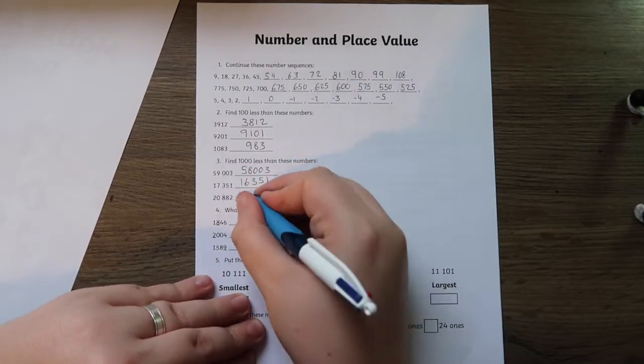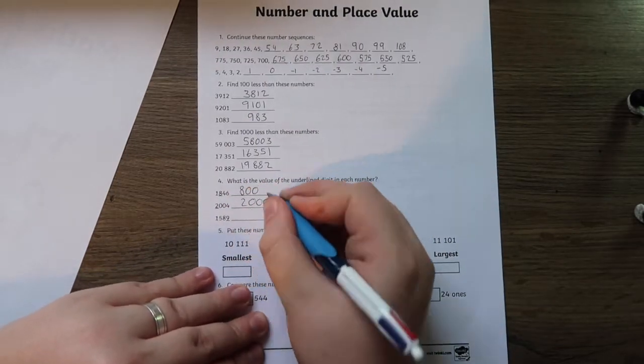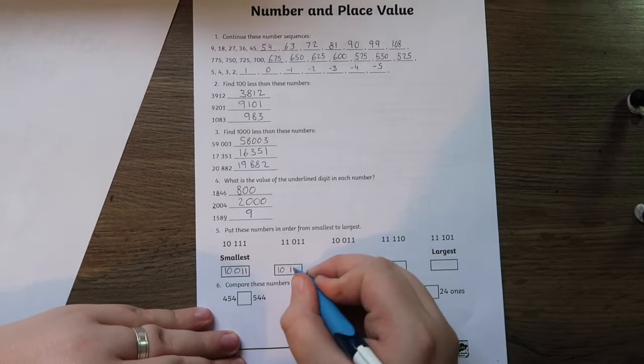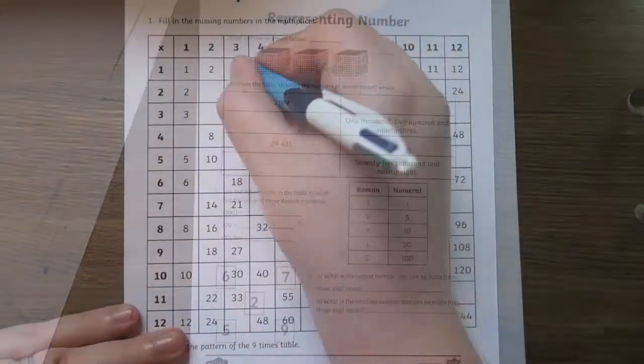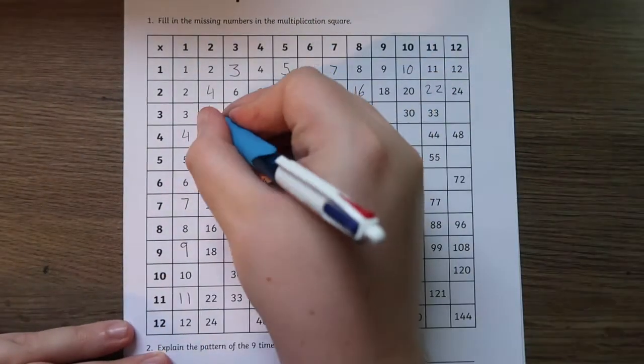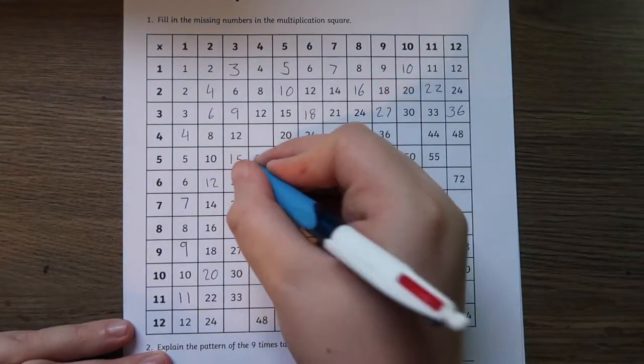Perfect to work alongside our Year 4 Maths Revision Booklet, this range of activity sheets for eight and nine-year-olds is ideal for independent learning, homework, or as an extension to the maths lesson.